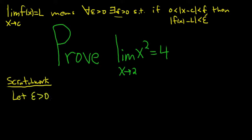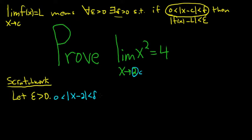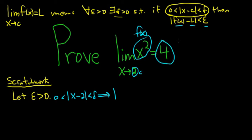To do the scratch work we kind of have to work backwards. We start by having an epsilon, and we assume that the distance between x and c is less than delta. In this case c is 2, so we have the distance between x and 2 less than delta. This should imply that the distance between f of x and L is less than epsilon. So this is x squared minus 4, and we want that to be less than epsilon. We're figuring out the proof right now — we're figuring out the delta. This is the hard part.